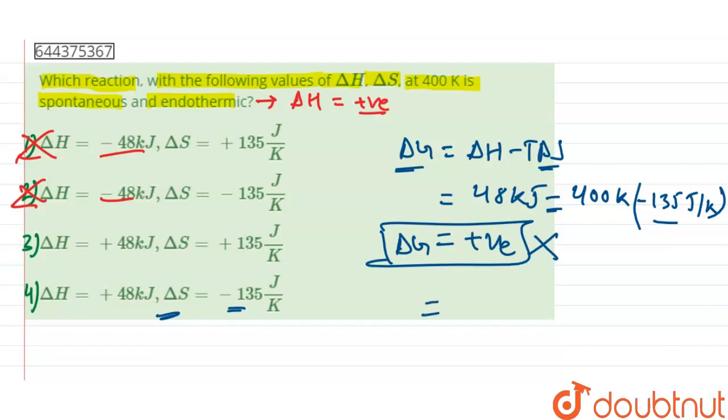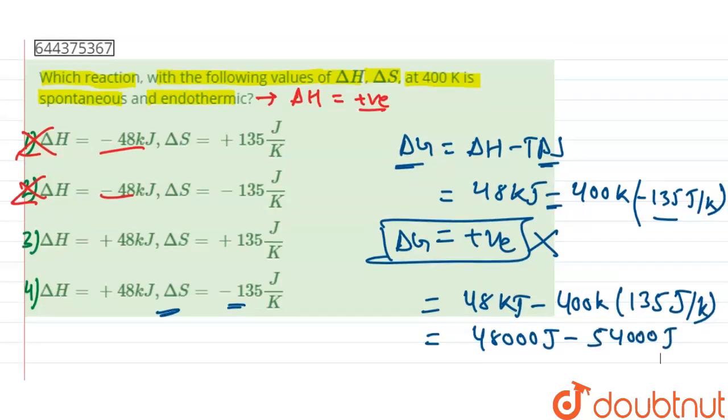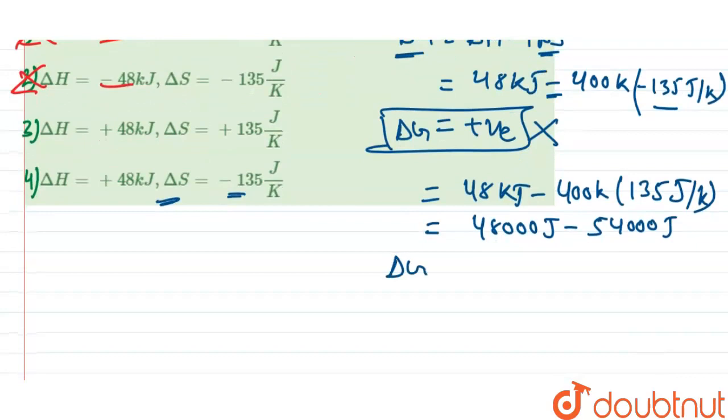Now if we put delta H 48 kilojoules minus temperature 400 Kelvin and delta S will be plus 135 joules per Kelvin, then we get 48,000 joules minus 54,000 joules which gives delta G is equal to minus 6000 joules.